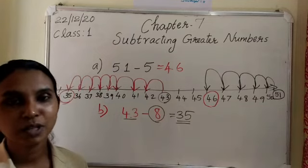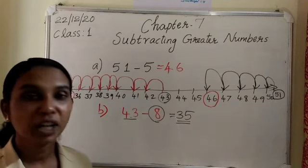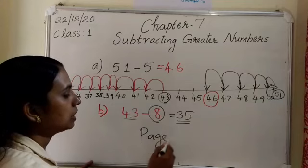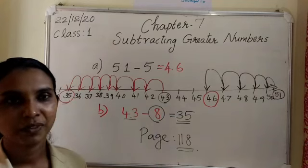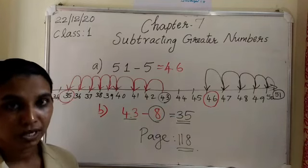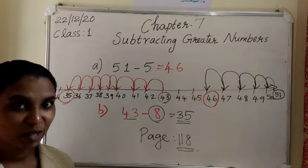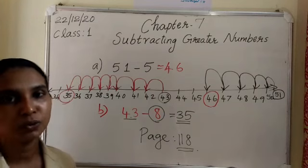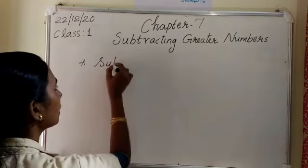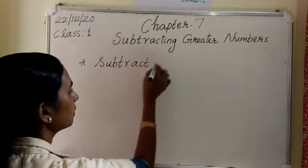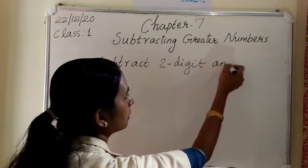Did you all understand how to subtract using a number line? Then you can do your textbook exercise, page number 118. Next we are going to study subtracting a 2-digit number and a single digit number, and at the same time a 2-digit number and another 2-digit number.